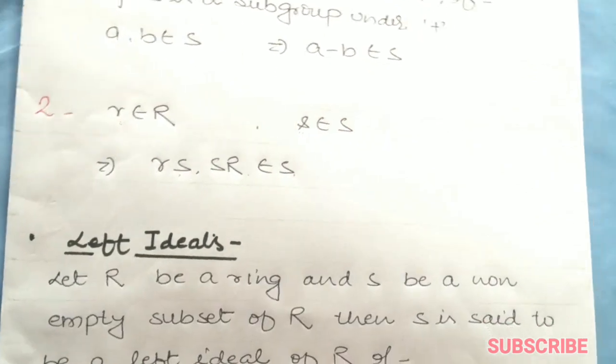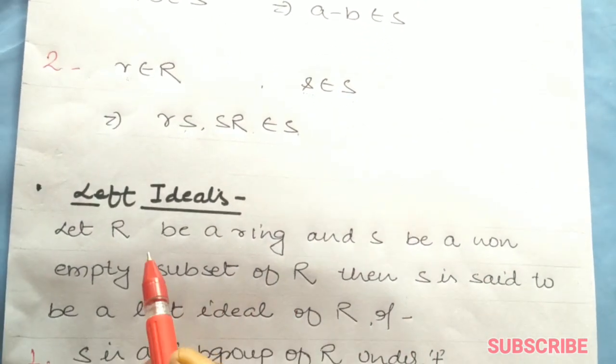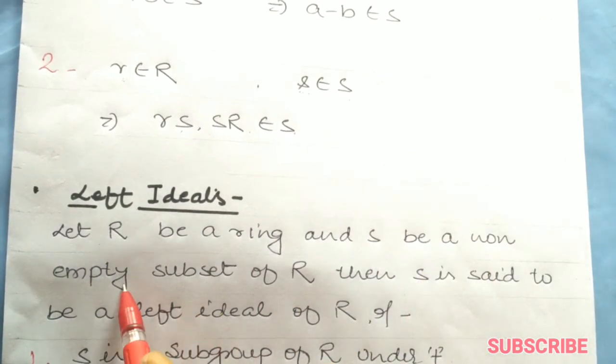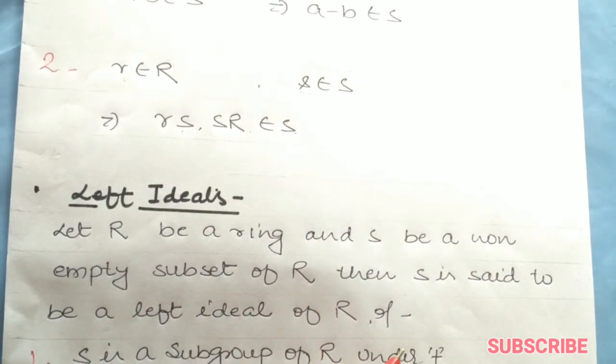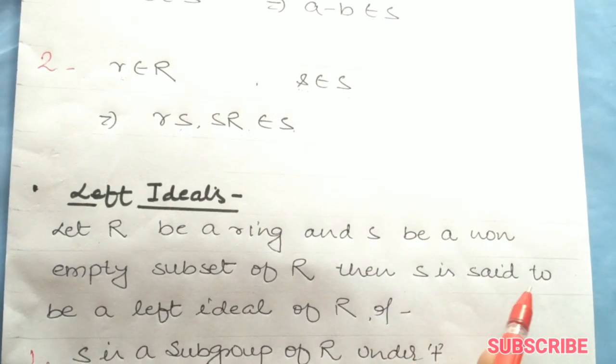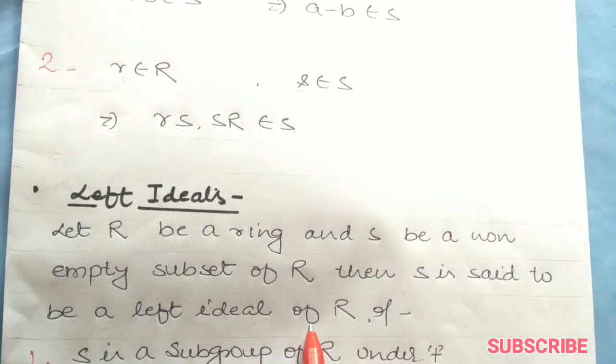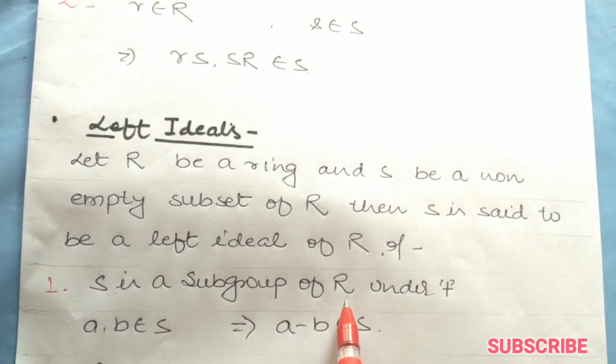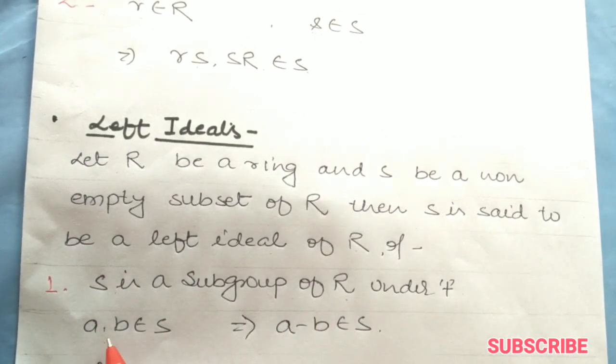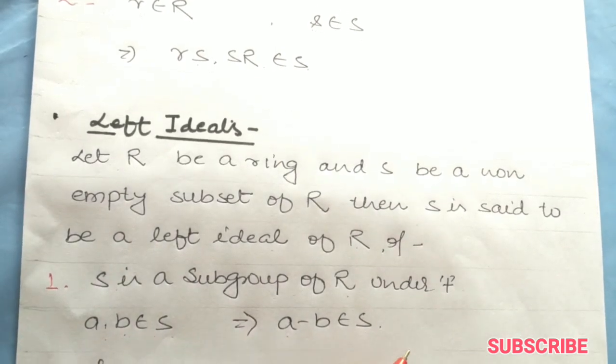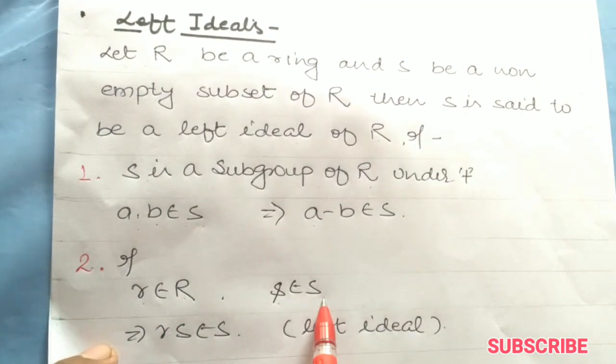Let R be a ring and S be a non-empty subset of R. Then S is said to be a left ideal of R if, as I said before, it's a subgroup under addition. If a, b is in S, then a minus b is in S.